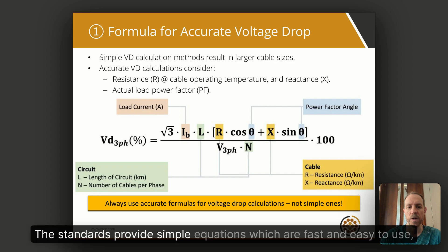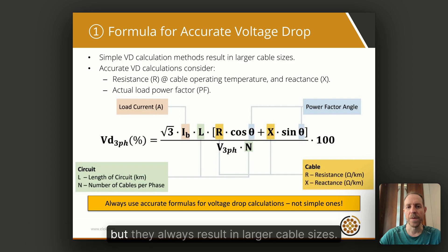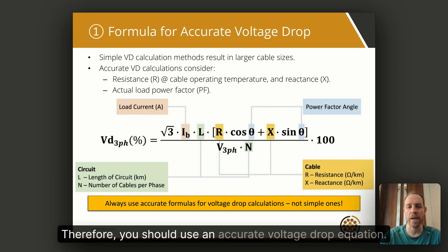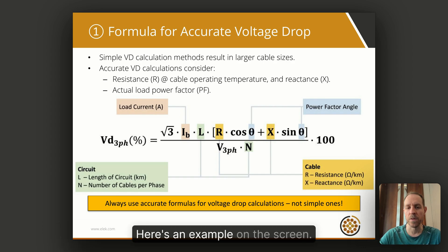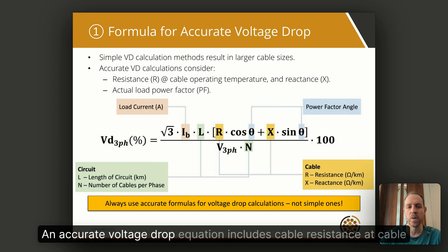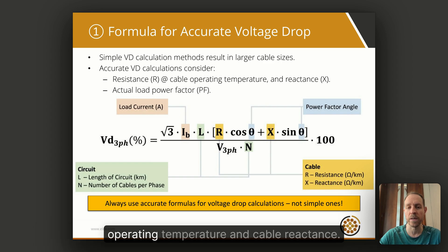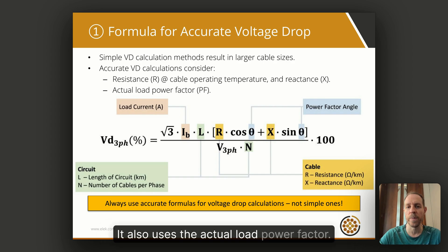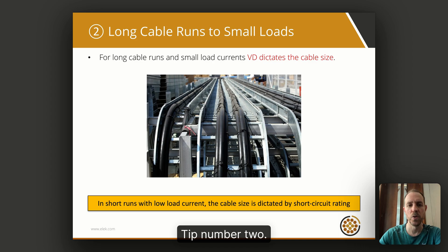Tip number one: use an accurate formula for voltage drop calculations. The standards provide simple equations which are fast and easy to use, but they always result in larger cable sizes. Therefore, you should use an accurate voltage drop equation. An accurate voltage drop equation includes cable resistance at cable operating temperature and cable reactance. It also uses the actual load power factor.